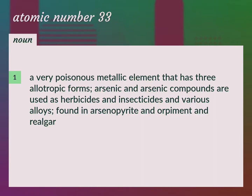A very poisonous metallic element that has three allotropic forms. Arsenic and arsenic compounds are used as herbicides and insecticides and various alloys. Found in arsenopyrite and orpiment and realgar. Arsenic: As.